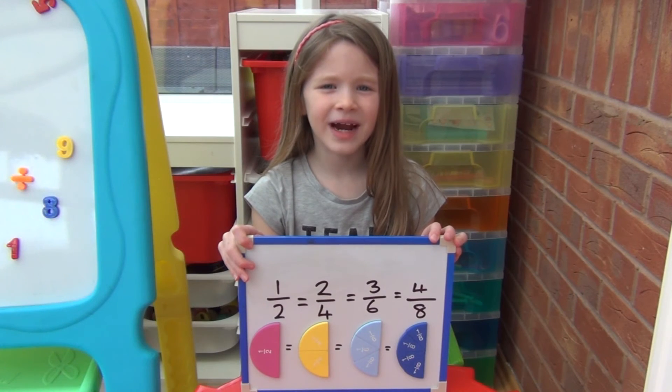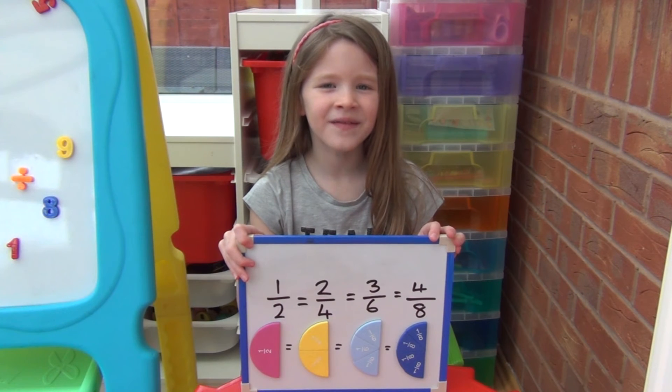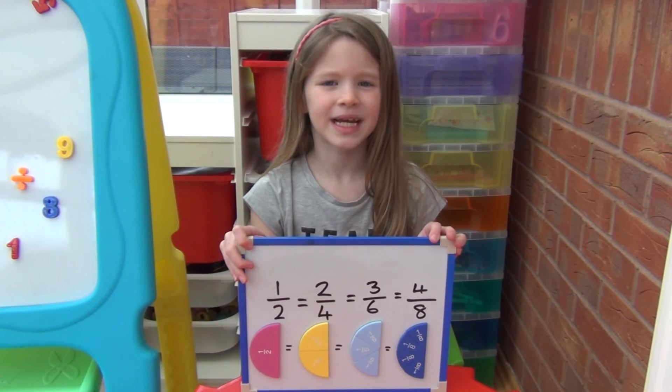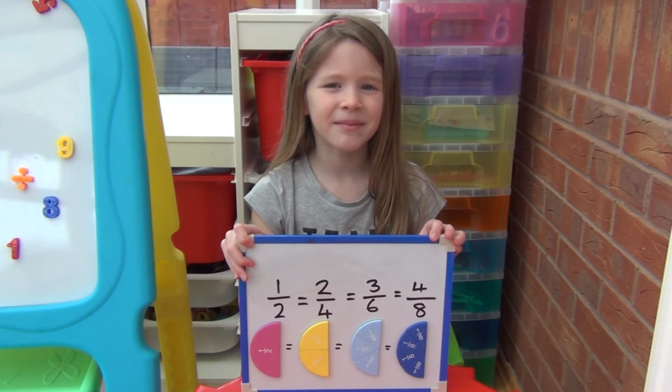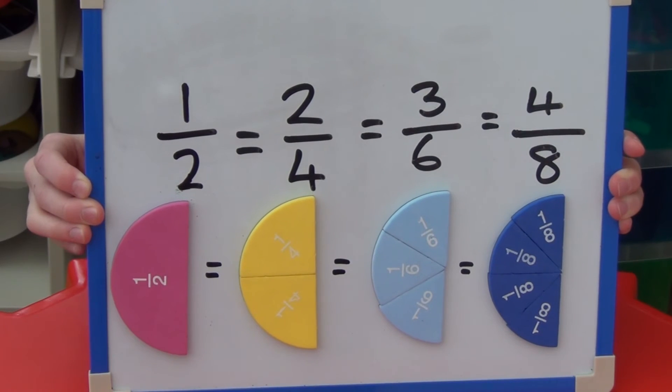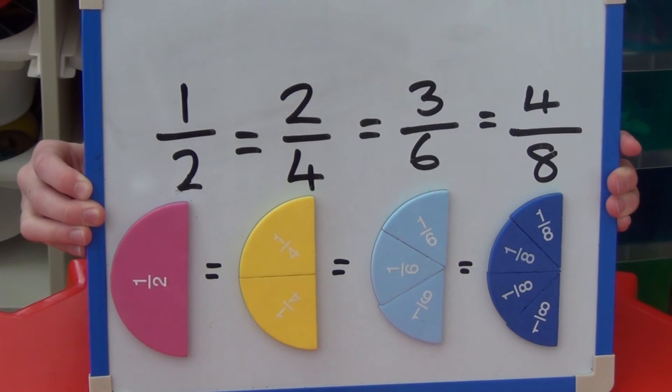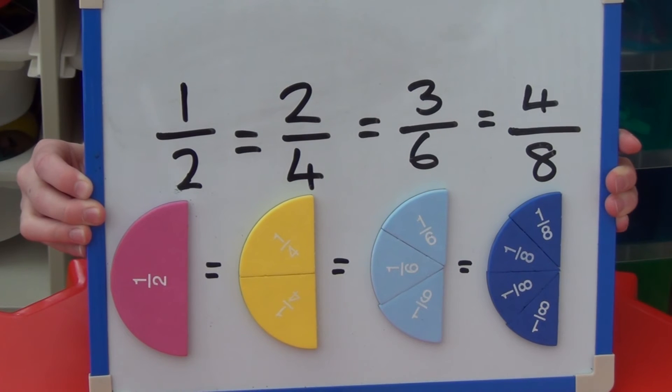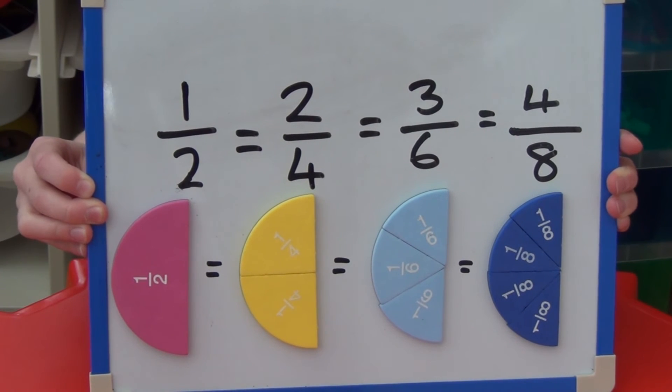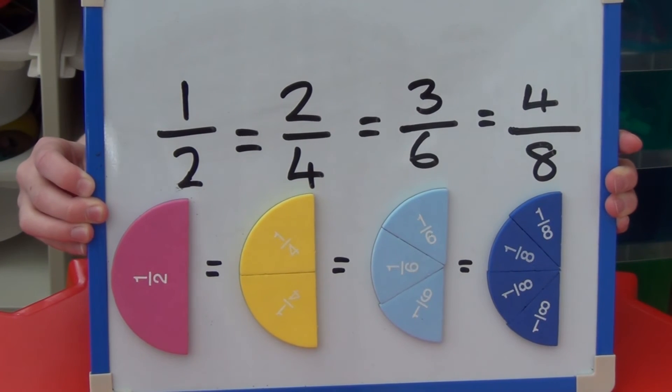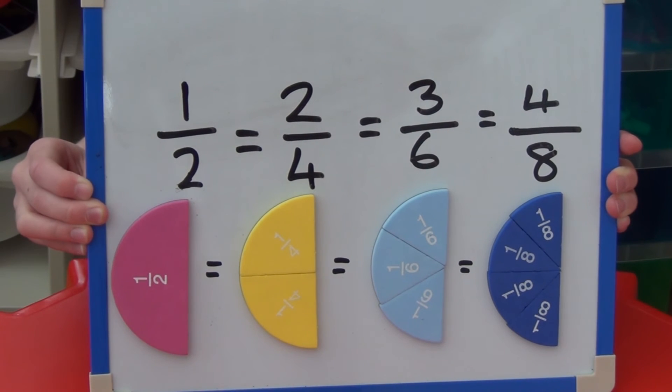If we look at fractions that are equivalent to a half we can see a link between the numerator and the denominator for each one. One half is the same as two-quarters, three-sixths and four-eighths. If you look at the numerator for each fraction it is always exactly half the denominator. Any fraction where the numerator is exactly half of the denominator is equivalent to a half.